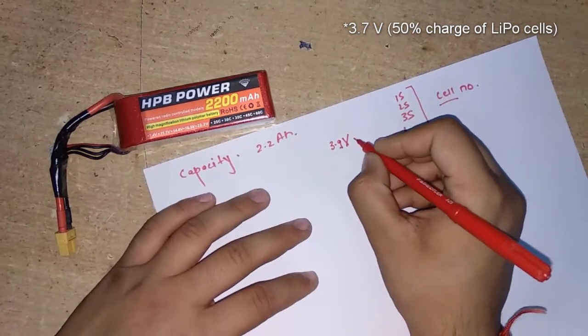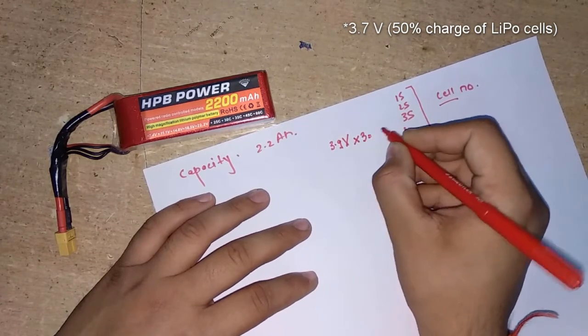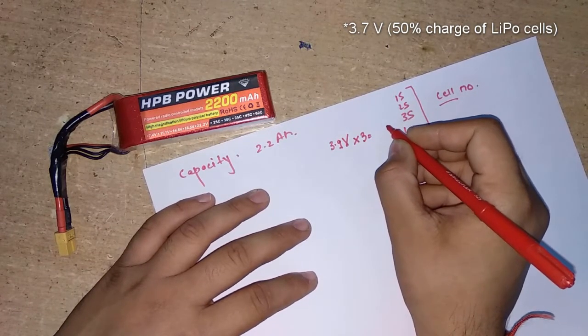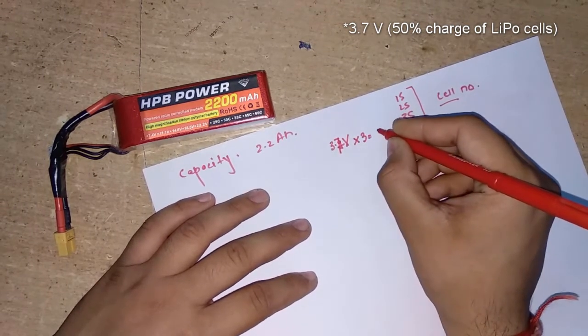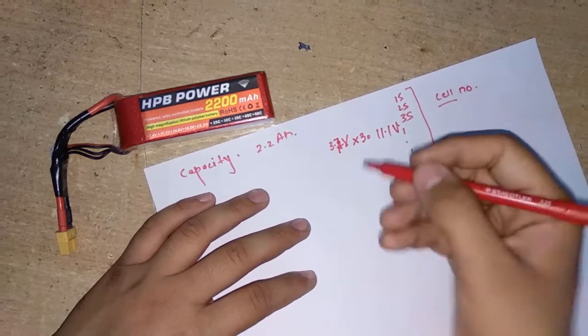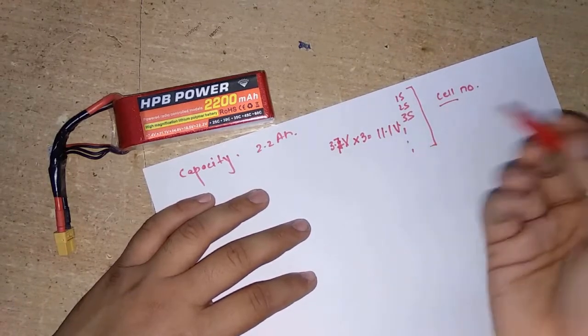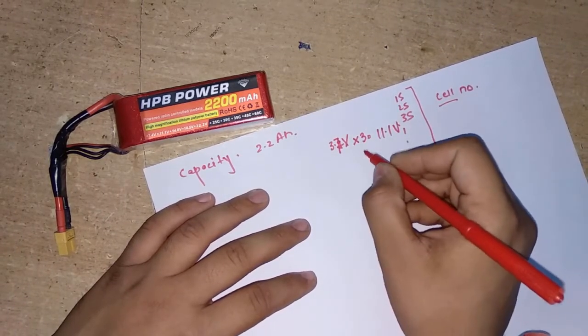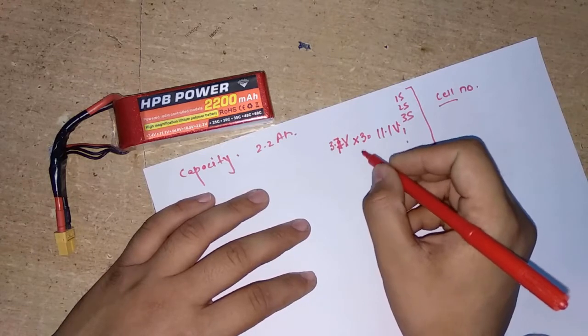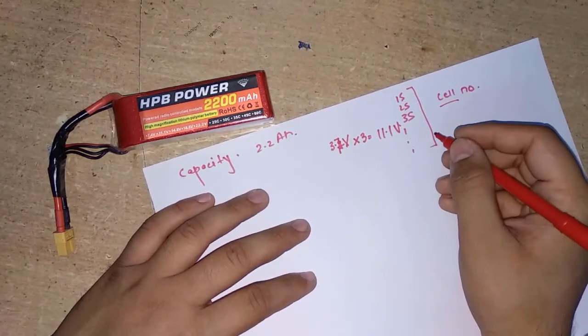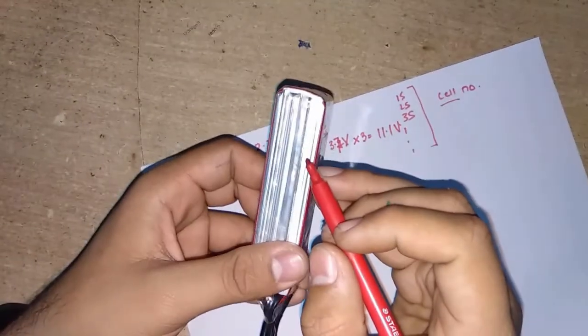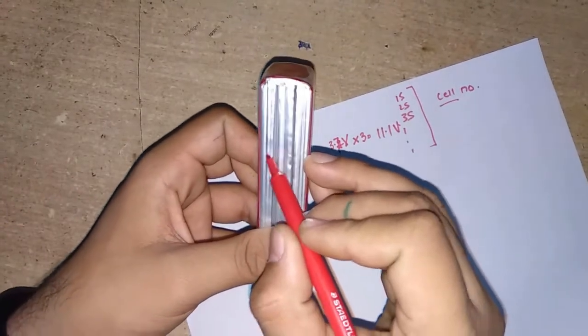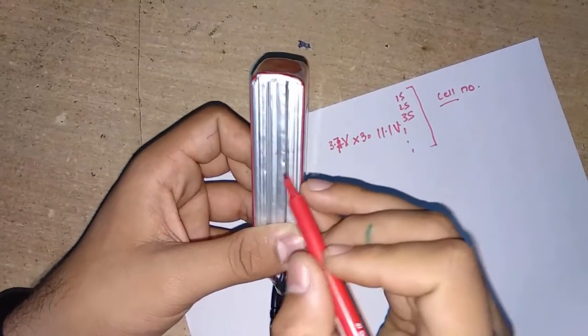If I get a 3 cell battery, I will simply multiply it by 3.7 volts, which will give me around 11.1 volt. If I want to go higher, I'll go for a 4 cell battery or a 5 cell battery which will give me more voltage. This is an 11.1 volt battery, meaning it has 3 cells. You can clearly see all the 3 cells in here. They are very clearly visible.